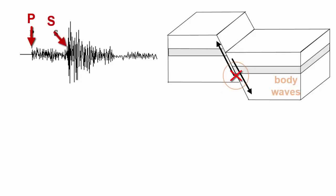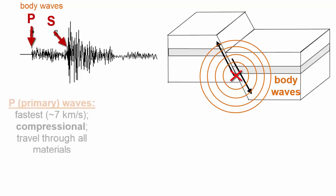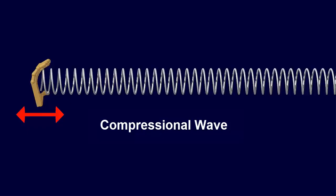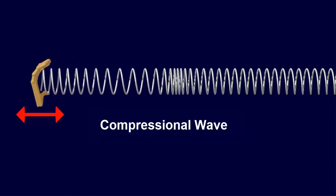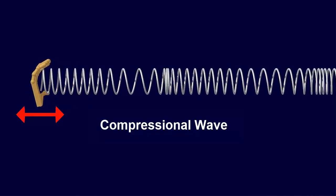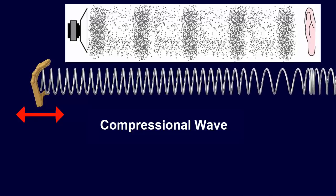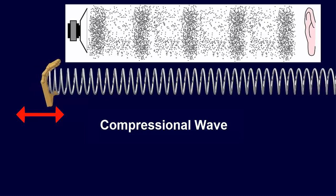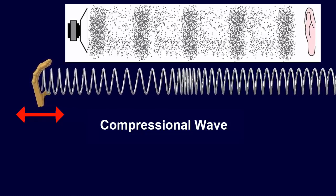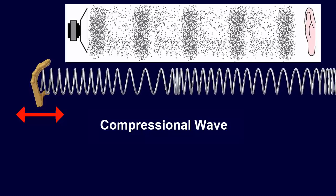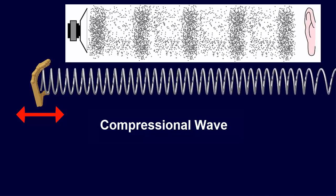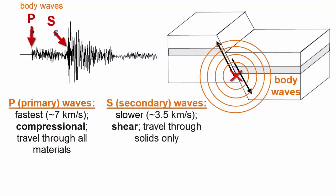After a fault ruptures at depth, there are two body waves that emanate outward. The fastest body waves are the first to arrive at the seismograph stations on the surface and are called primary waves or P waves. They are compressional waves that travel on average seven kilometers per second. These energy waves are transmitted as the material through which they're traveling alternately compresses and expands. Sound waves are also compressional waves because all substances, solids, liquids and gases are capable of compression and expansion. Compressional waves can travel through all materials. We can hear sound traveling through the air, water, or solid rock.